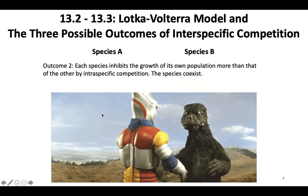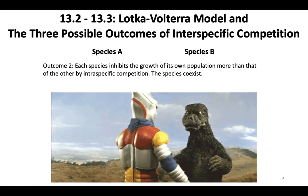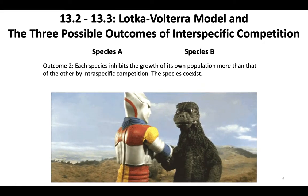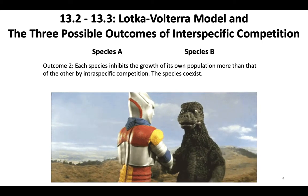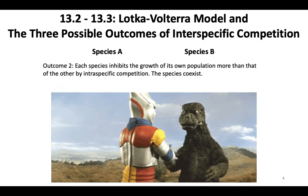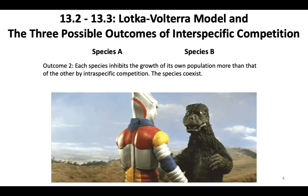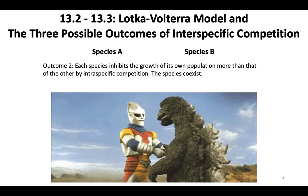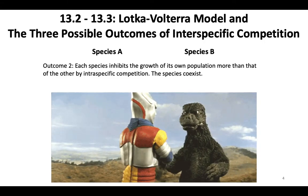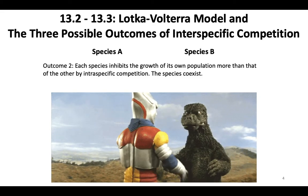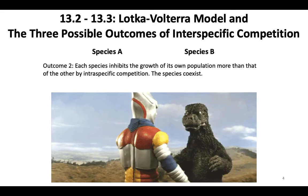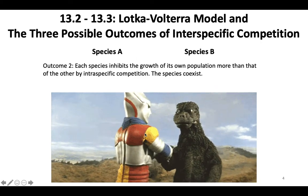The next outcome is when each species inhibits the growth of its own population more than that of the other through intraspecific competition, so the species end up coexisting. In no real environmental scenario do you have 100% complete competitors occupying the exact same niche — species A might switch to another resource or do something else, so each species controls its own growth enough that it doesn't cause the other species to go extinct.